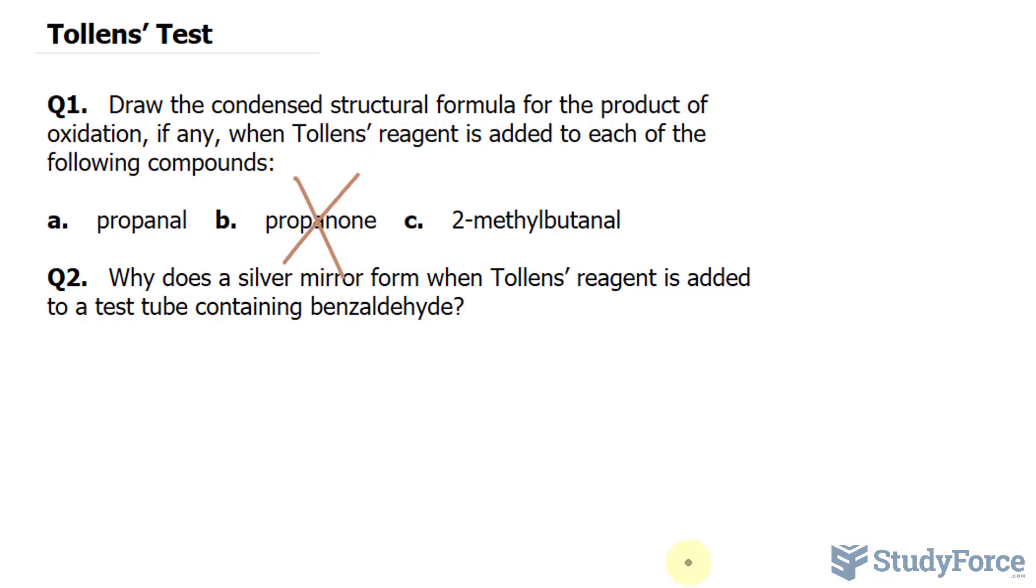What about propanal? First of all, propanal looks like this. We have a three-carbon chain, and given that it's an aldehyde, it has a double bond on the first carbon. Notice there's no number in front of the word, so it's in the first one, and that's what propanal looks like.